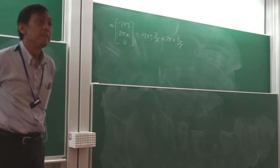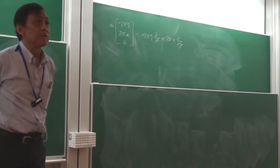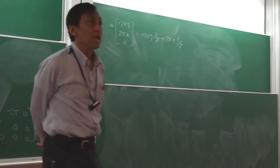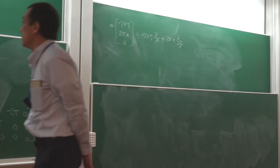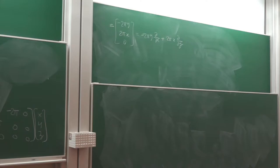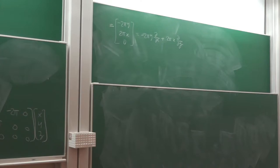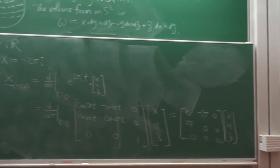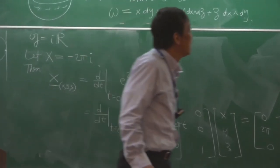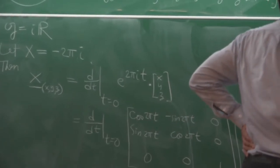This is an action on the left, so the minus sign on the exponential cancels out — that's why I chose minus 2πi. So in the exponent it's just 2πit. And so that's my X-bar.